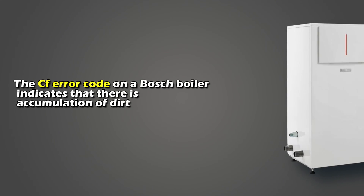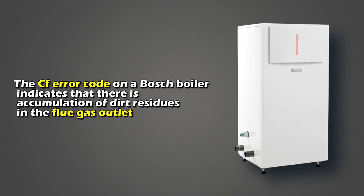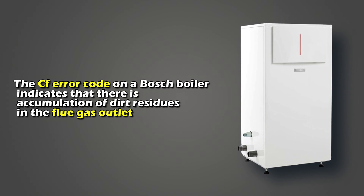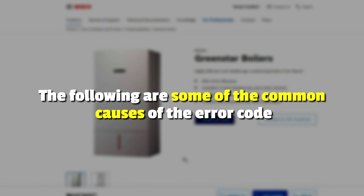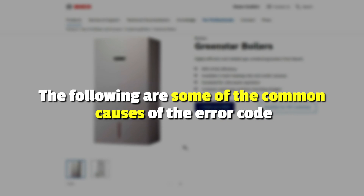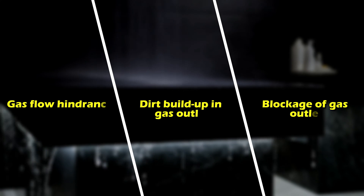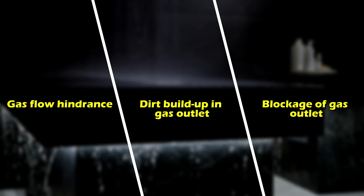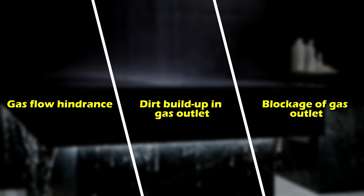The CF error code on a Bosch boiler indicates that there is an accumulation of dirt residue in the flue gas outlet. The following are some of the causes of the CF error: gas flow hindrance, dirt buildup in the gas outlet, or a blockage of the gas outlet.